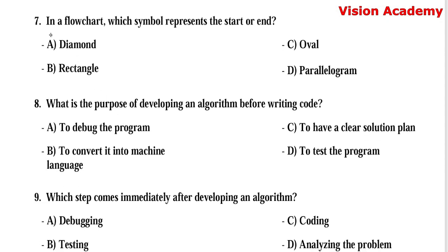Question number 7: In a flowchart, which symbol represents the start or end? Option A, diamond. Option B, rectangle. Option C, oval. Option D, parallelogram. Here, option C, oval, is the right answer.